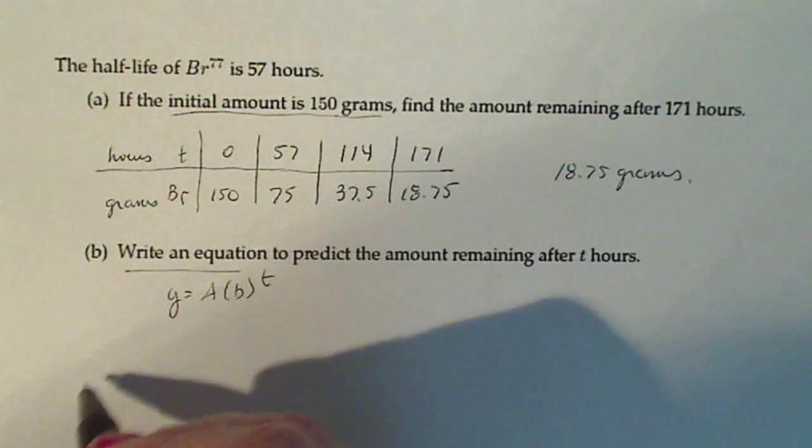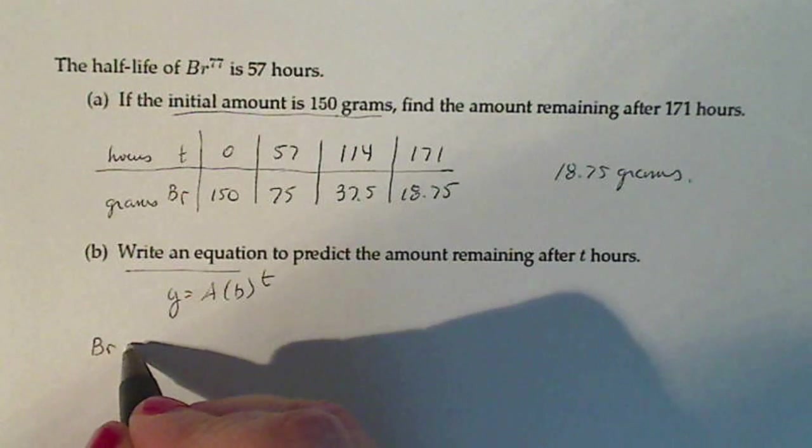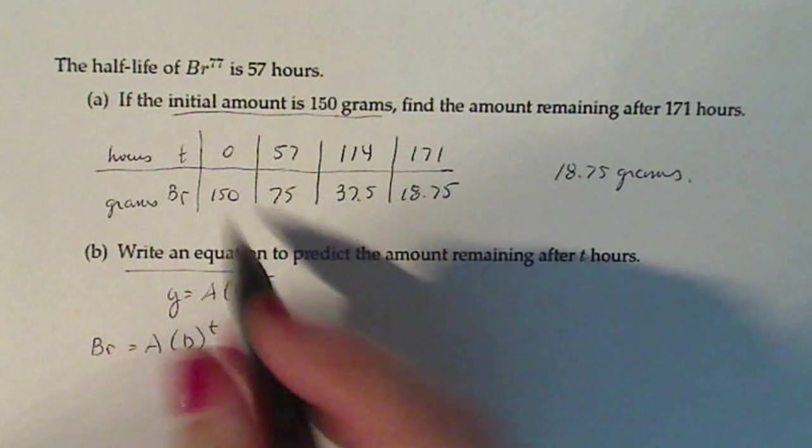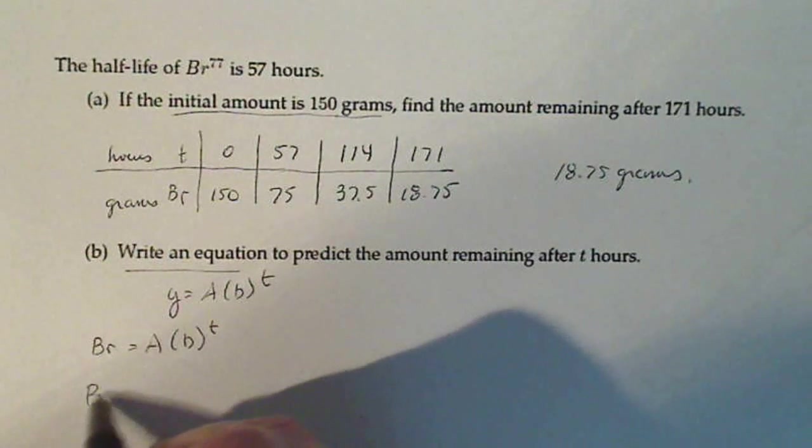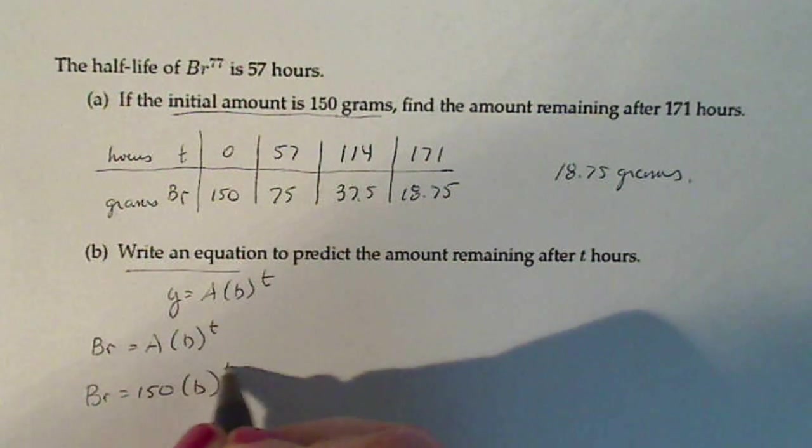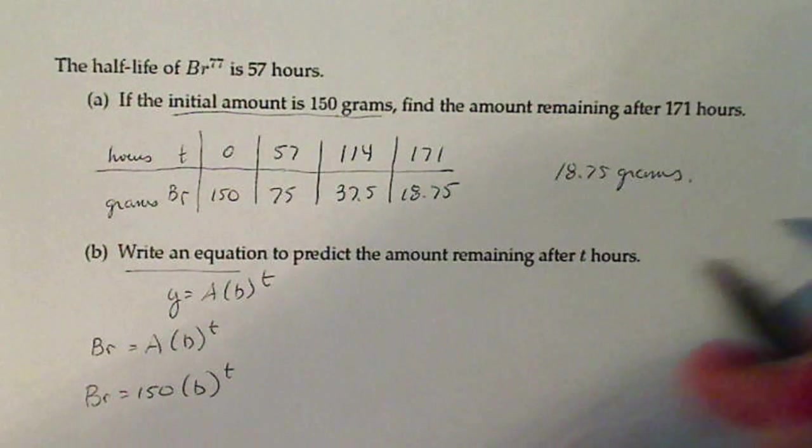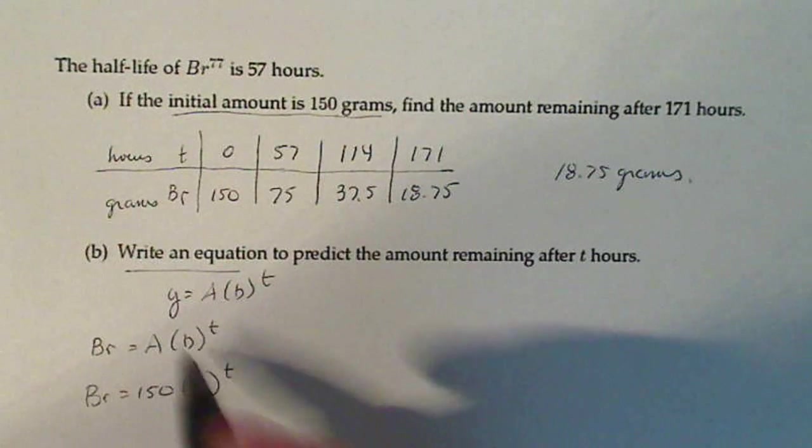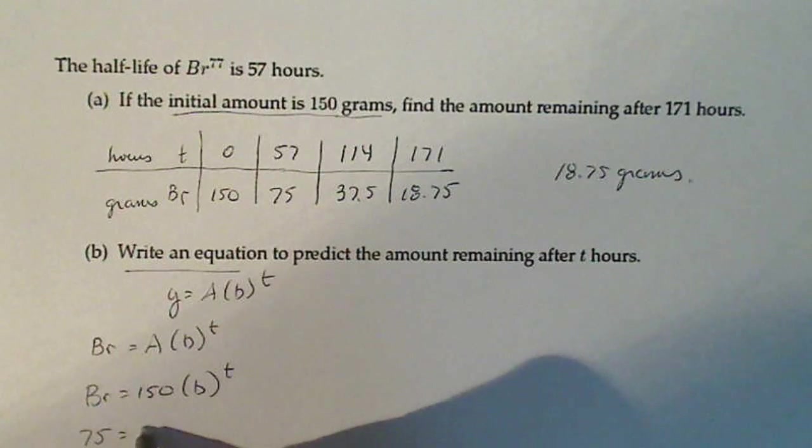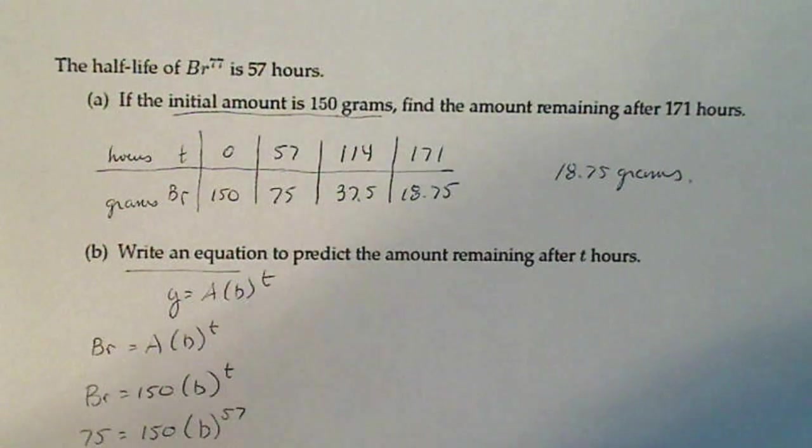We're going to use our variables here. So Br is equal to A times B to the t. Capital A stands for initial amount, so that's 150. And then I'm going to use any other ordered pair to come up with my value for B. So I'll just use the next one. There's 75 grams of Br-77 after 57 hours.